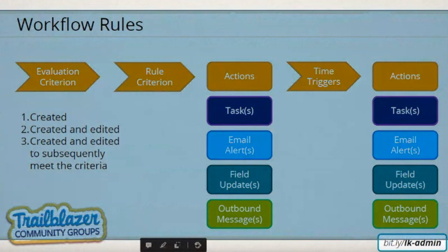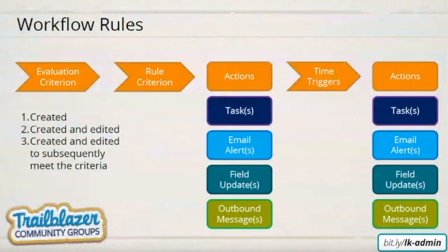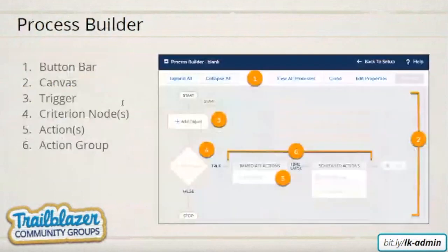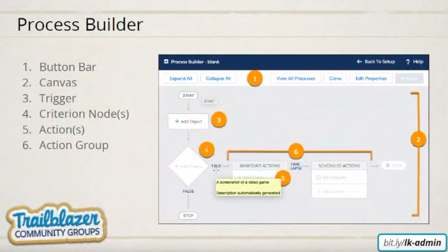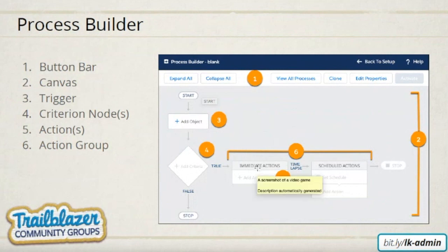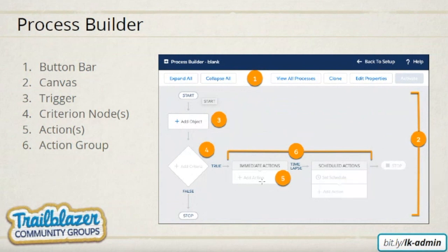This option is also available in process builder. Process builder has different criteria — you can set multiple criteria: one, two, three. It's kind of combining all the workflows in one place. For one object, you can put all the workflow rules together in a process builder with more actions. So you can call it that way — workflow rules sitting together with more features or capabilities for one object. This process builder always runs for one specific object.